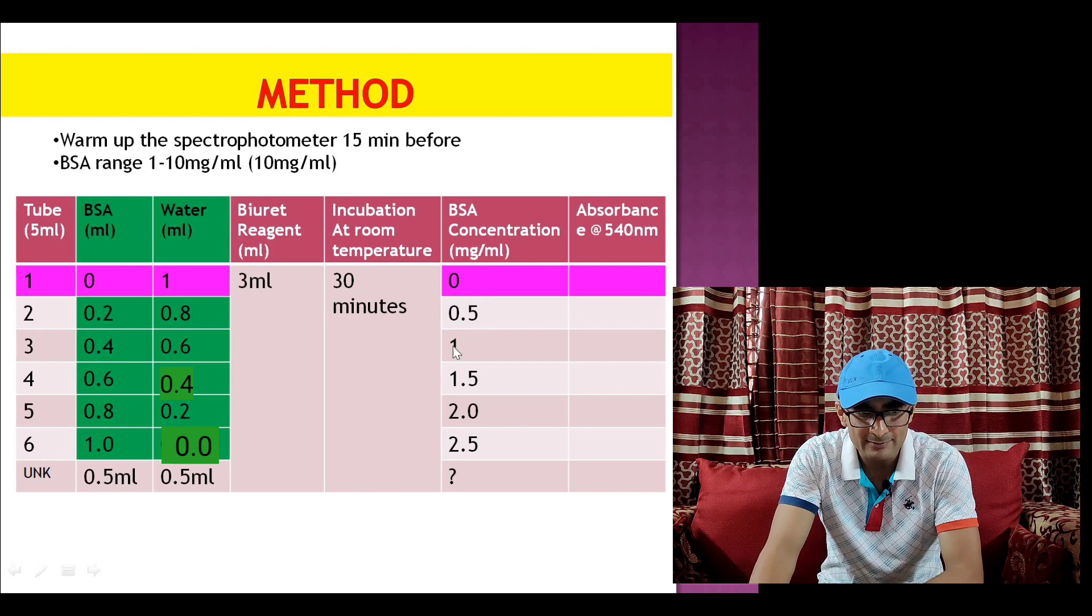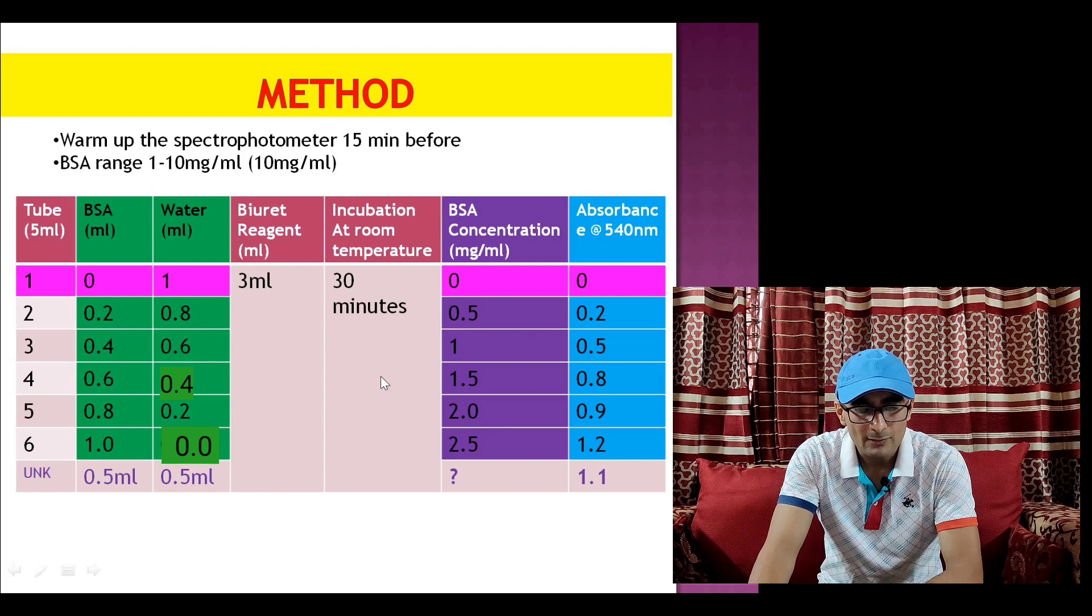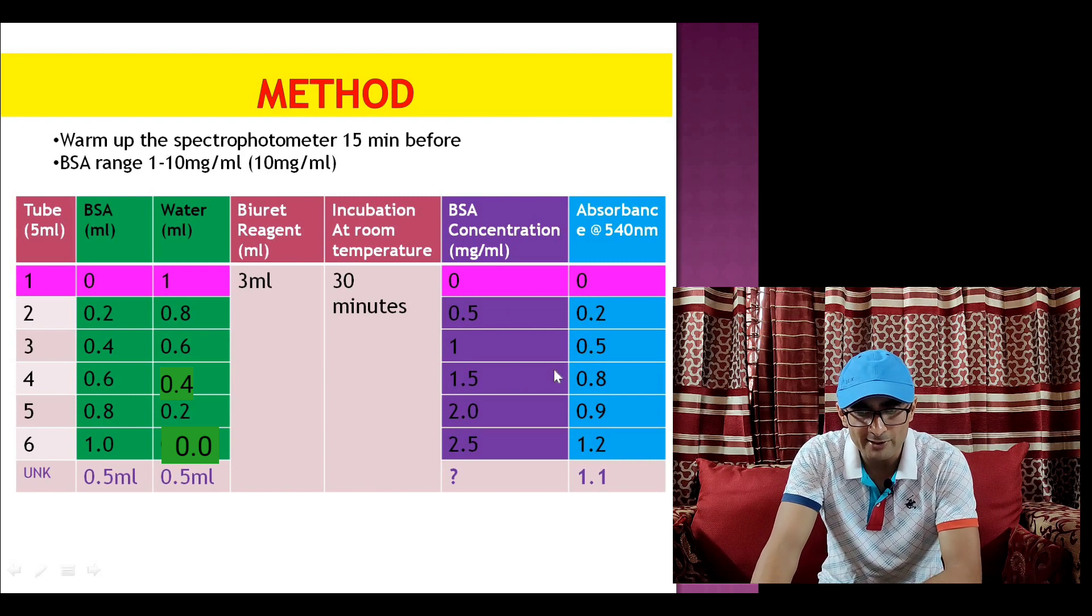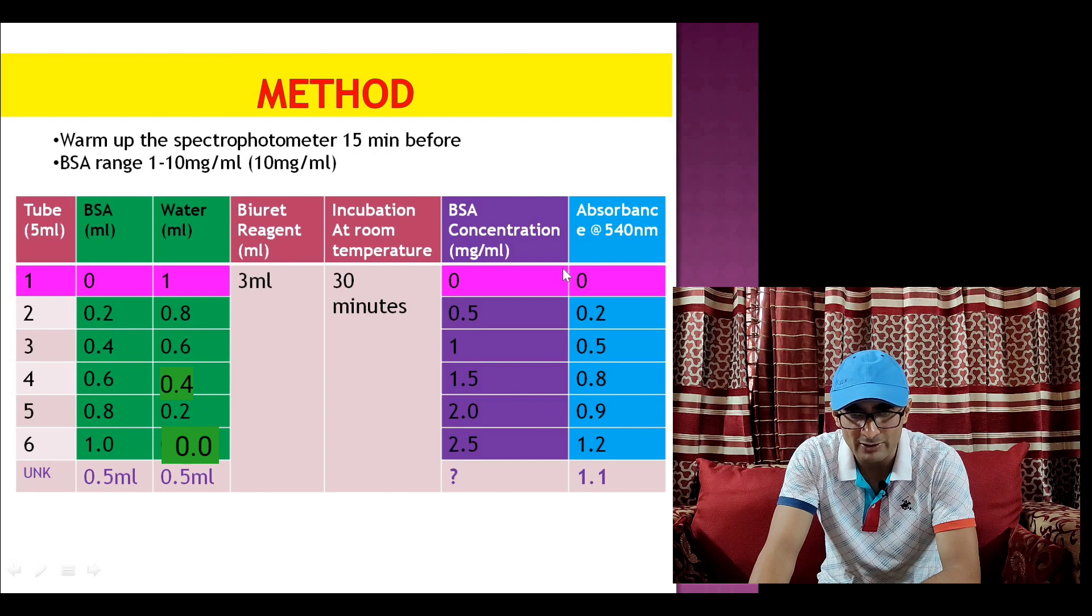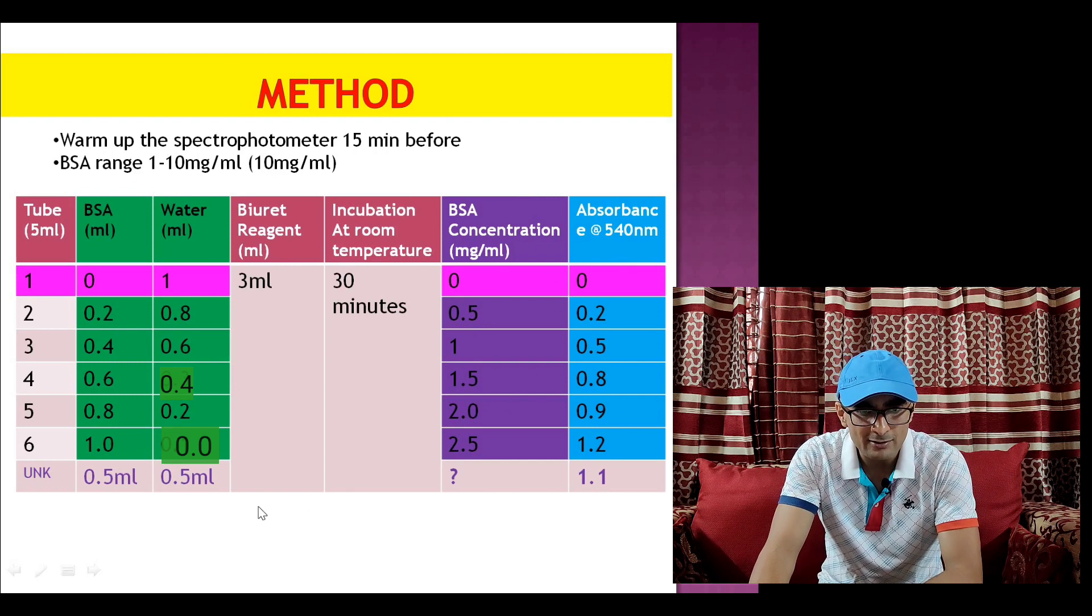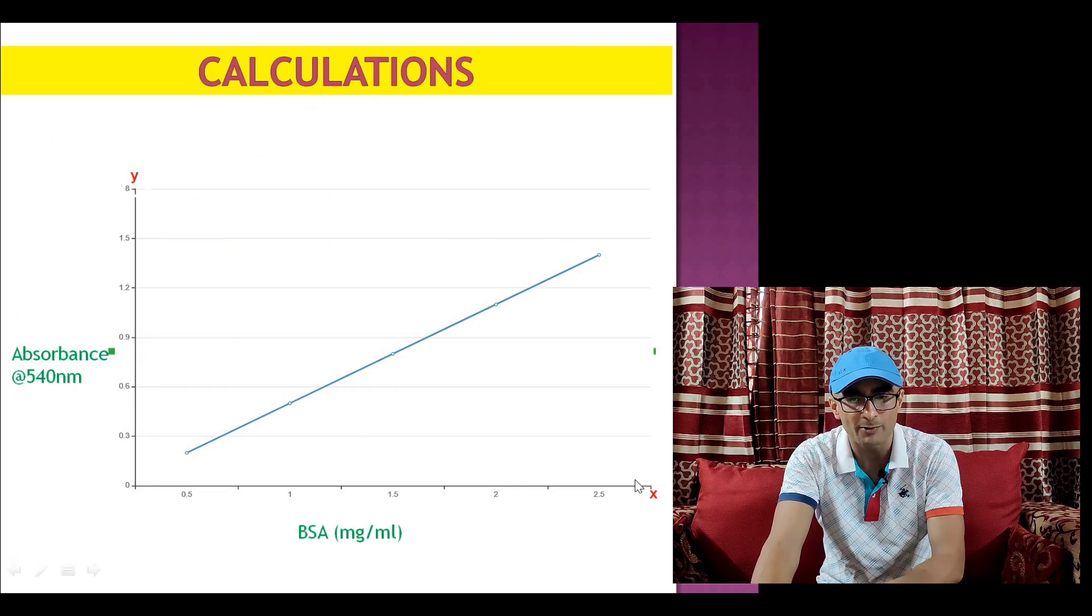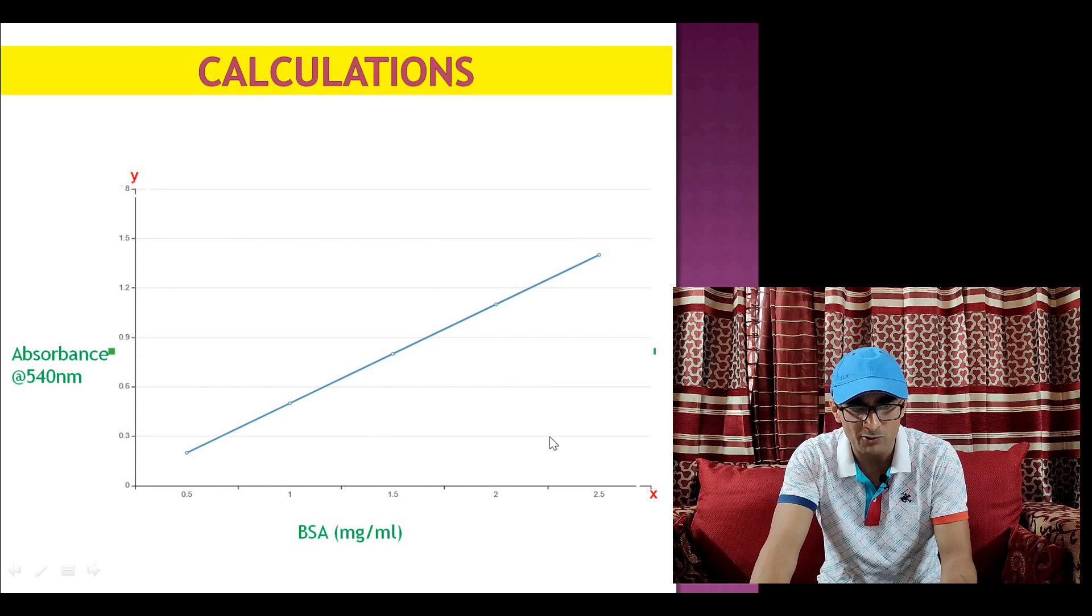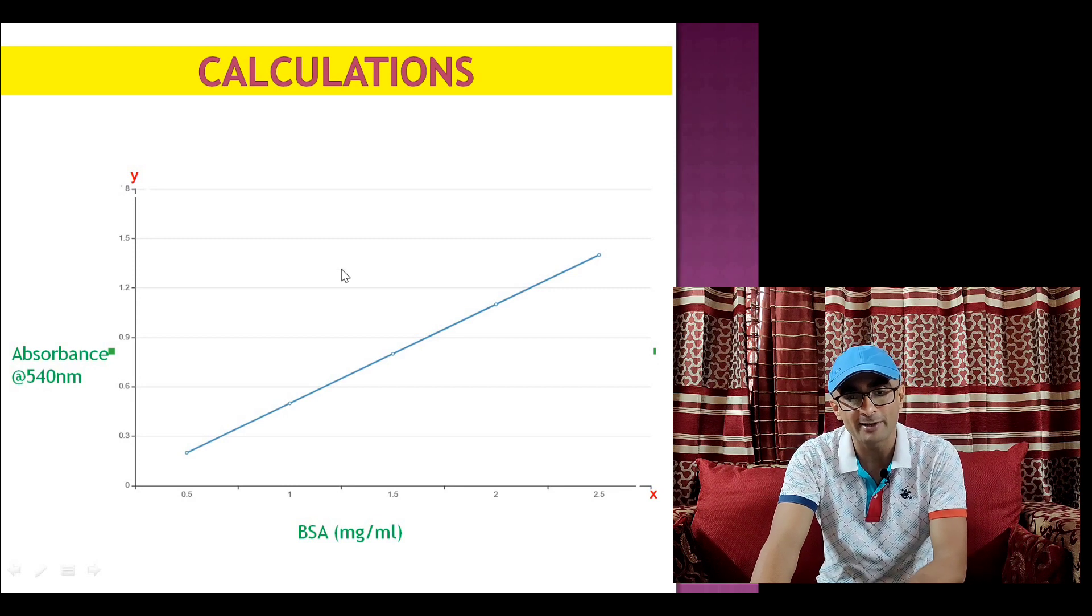Absorbance of BSA dilutions are taken at 540 nanometer and then using this data of BSA concentration and corresponding absorbance, standard curve can be plotted. For example, on x-axis you have BSA mg per ml concentration varying depending on what dilutions we have used and on y-axis we plot absorbance at 540 nanometer.